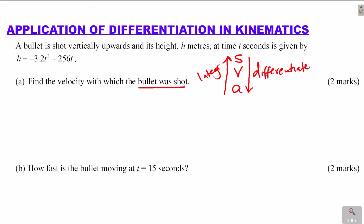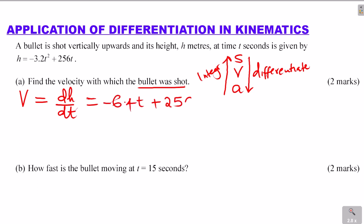So in this question, you're given displacement and required to get velocity, so you differentiate. Let's get the expression for velocity by differentiating height with respect to t. Differentiating h equals negative 3.2t squared plus 256t gives velocity equals negative 6.4t plus 256.